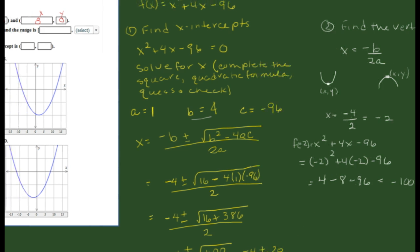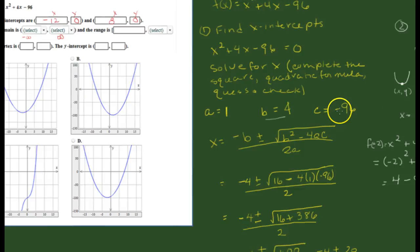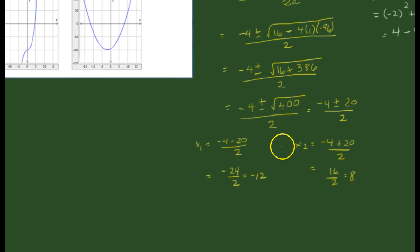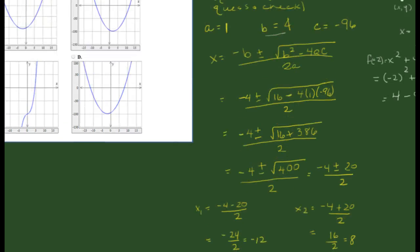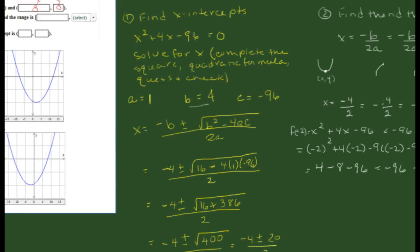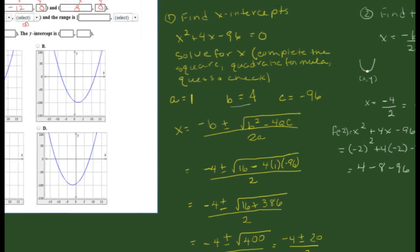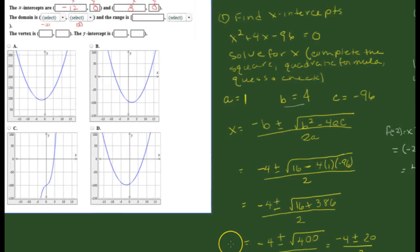So what we know about our graph so far is that it crosses the x-axis at -12 and 8, and it has a vertex of (-2, -100). Our vertex is negative 2 for the x-coordinate and negative 100 for the y-coordinate.